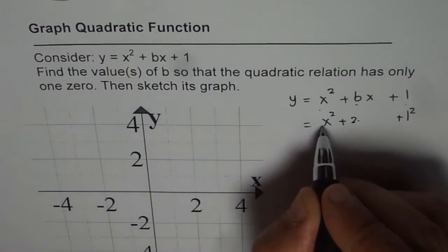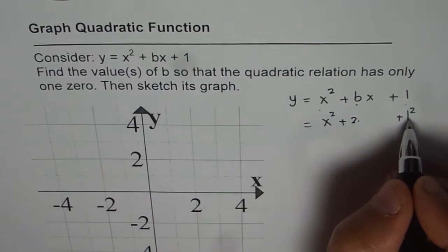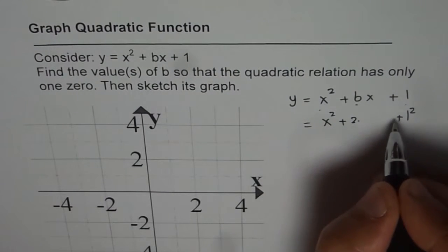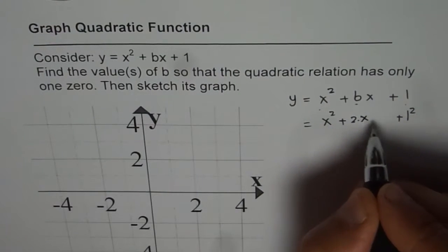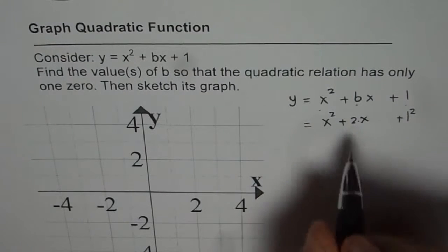So 2 times a is x, x squared, and b is 1, so 2 times 1 is 2x. So we have to write a function something like this.